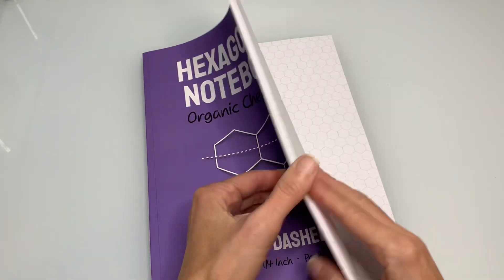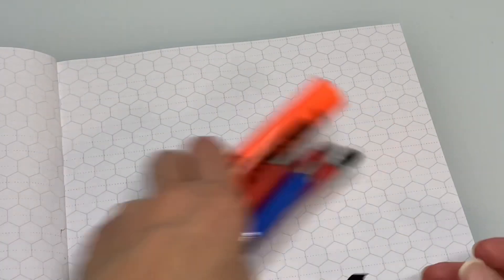Last I'm going to show you a notebook that is a combination of hexagons and horizontal lines right on top of each other. And I think this is a really really cool idea.